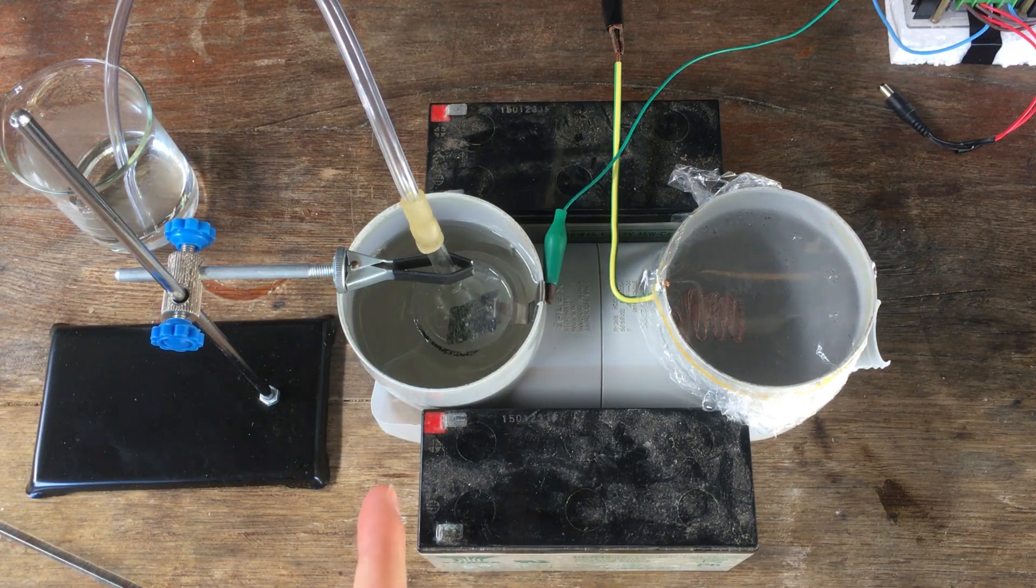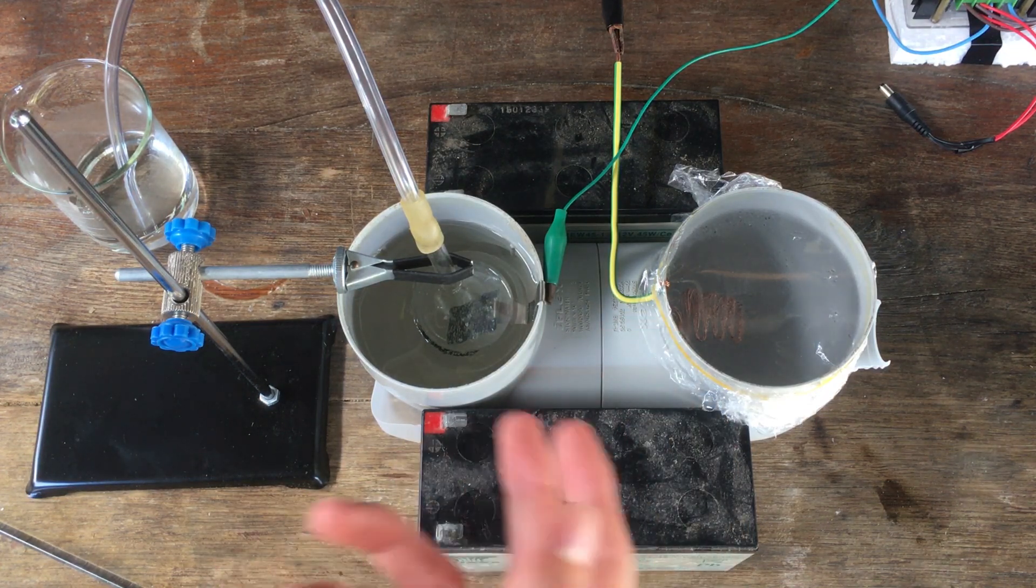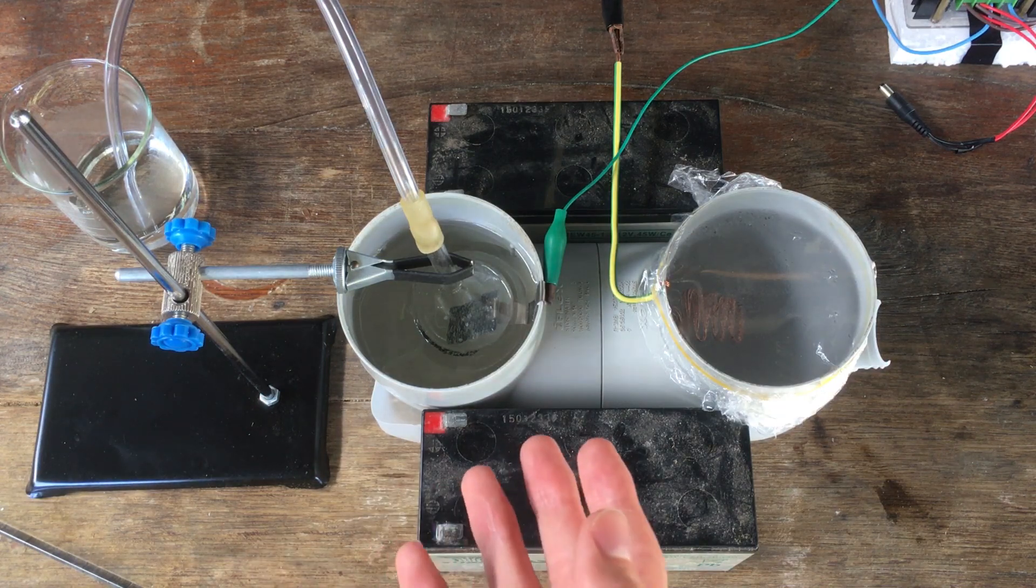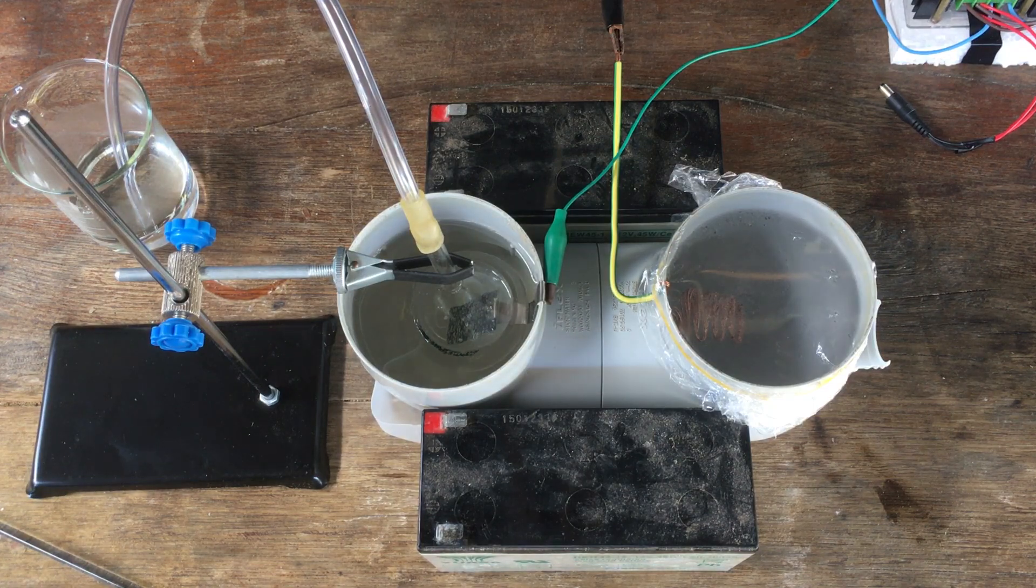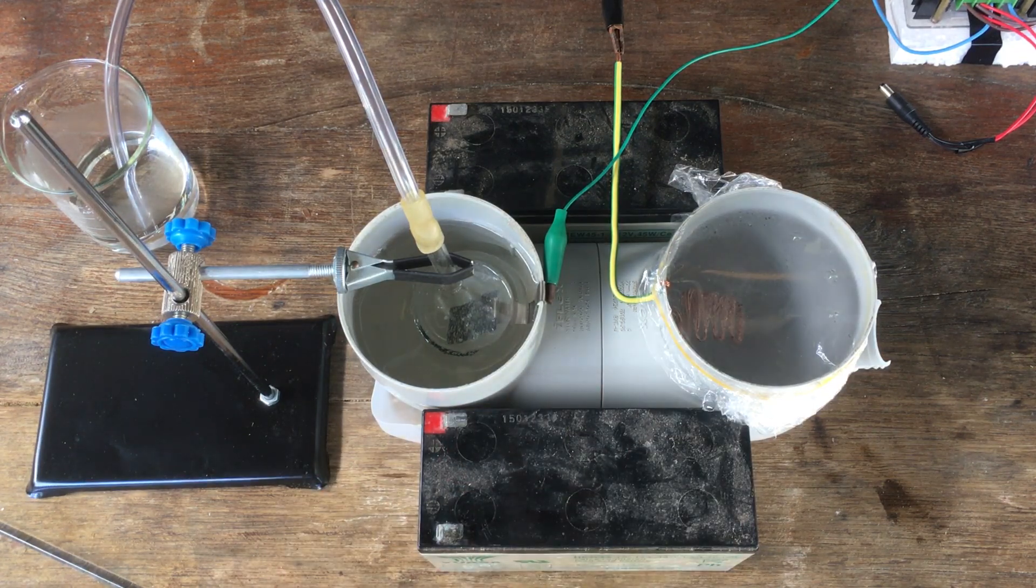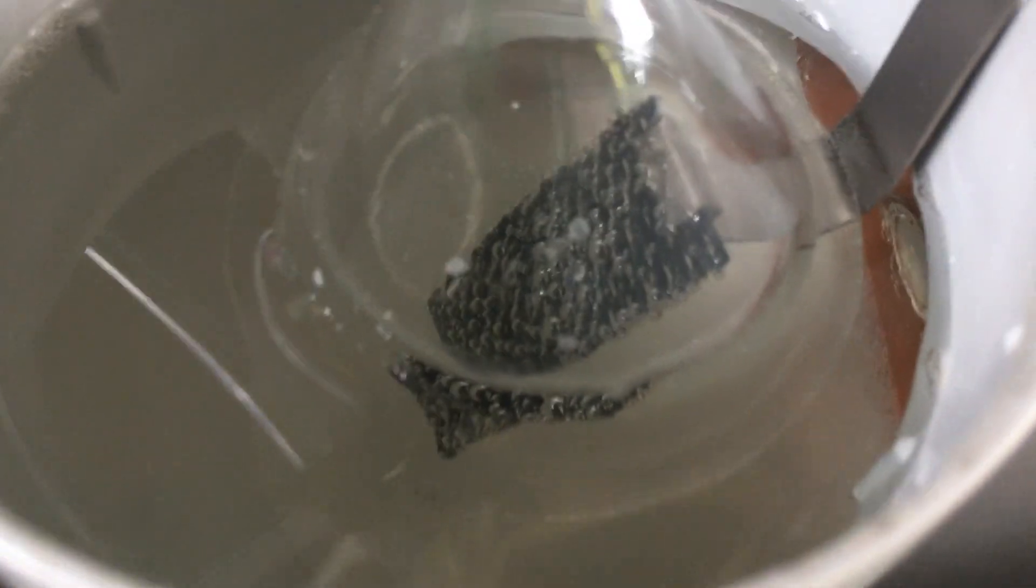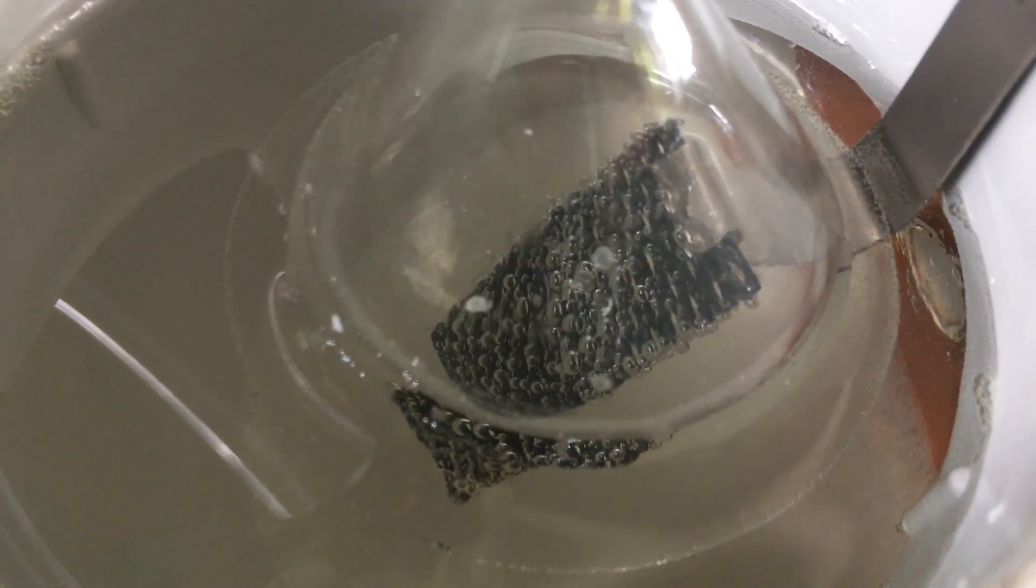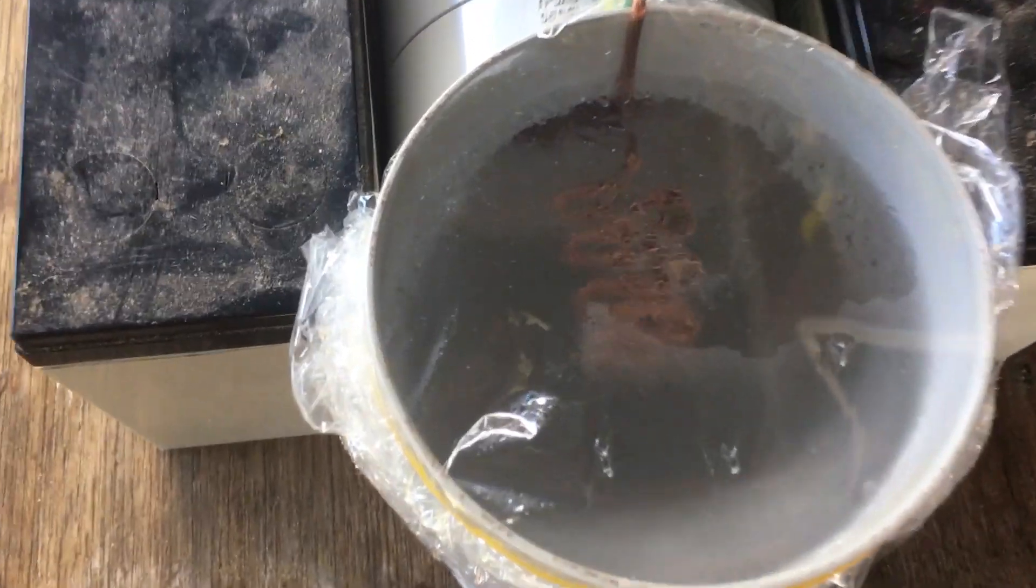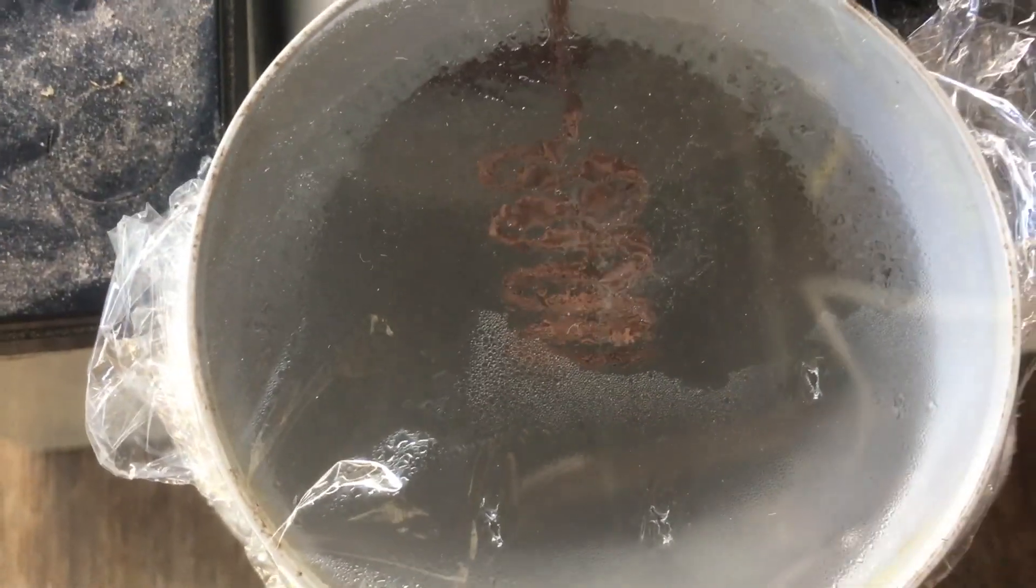Here we are four hours into the cell run. We haven't seen very much current build up over that time. I was expecting quite a bit more. We're only at around about 35 milliamps flowing at this stage. We're just at the stage now where, if I get you up close to the MMO anode right now, you can see we are generating a small amount of chlorine. The hydrogen of course is also bubbling off the copper cathode, but the visibility of that is not so great through our cling wrap.